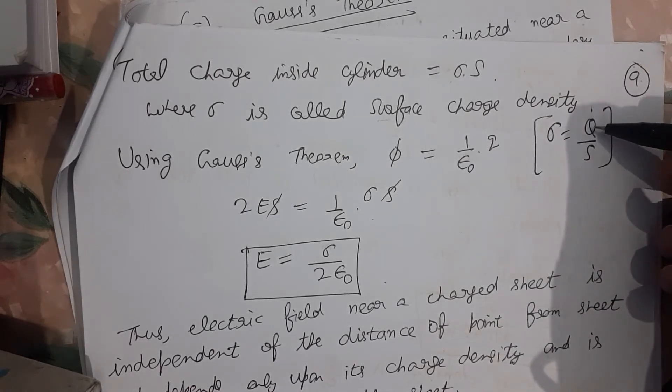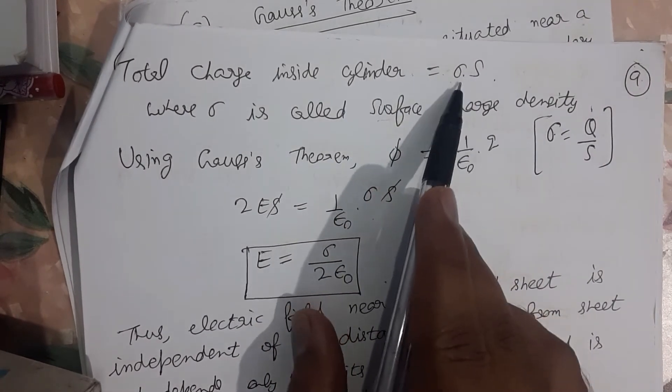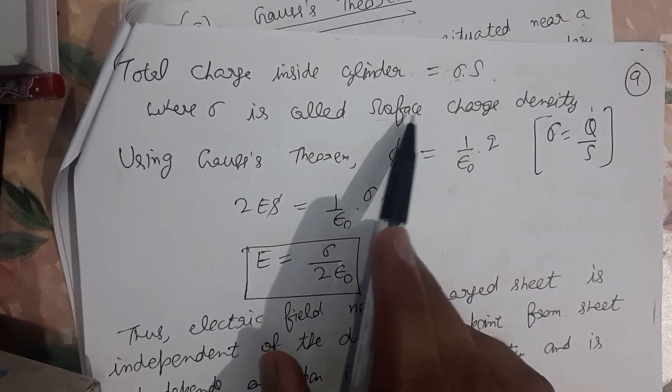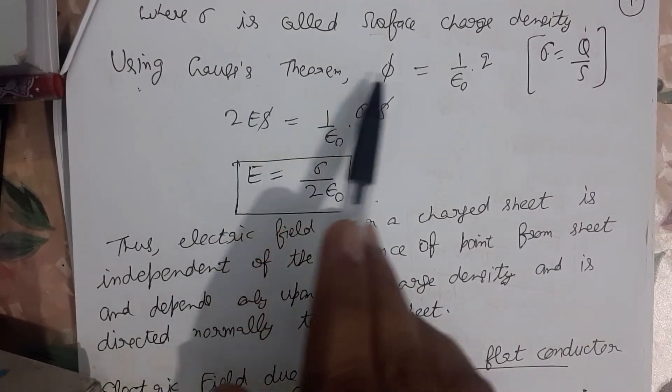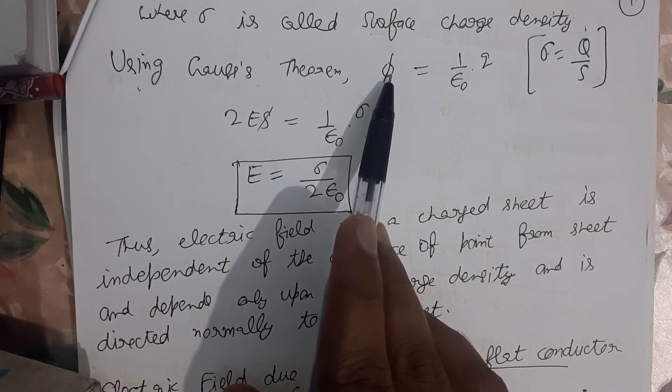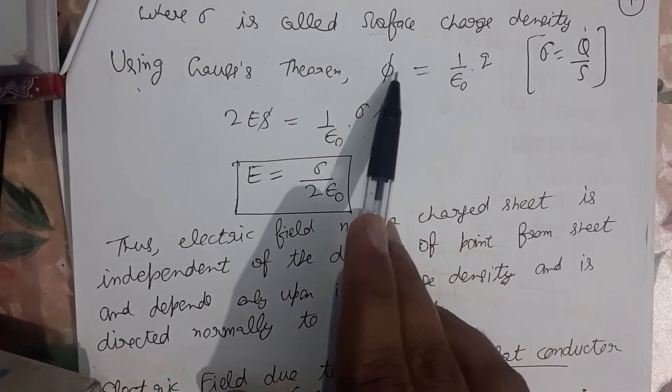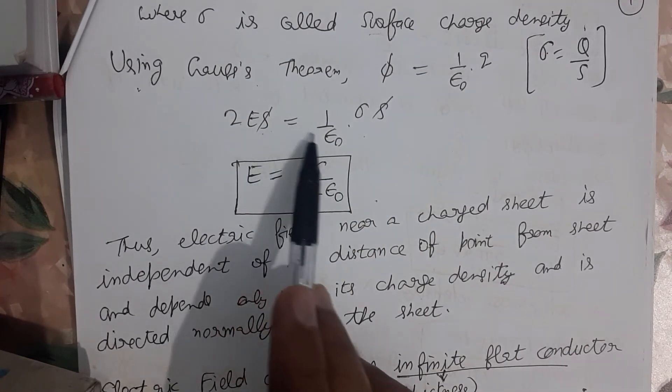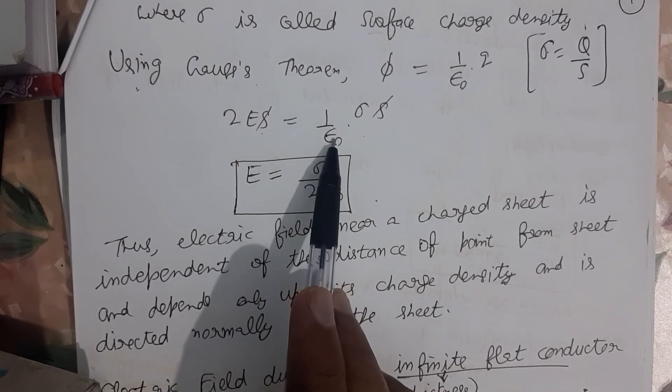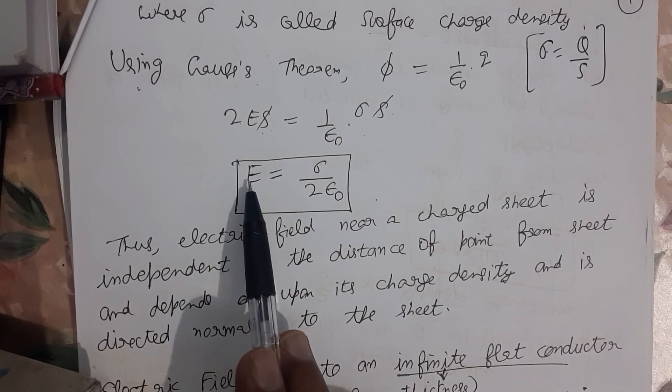From here, find out charge. It is equal to sigma into s. Sigma is known as surface charge density. According to Gauss theorem, we know that flux is given as Q upon epsilon naught. In the given diagram, Phi equals 2Es equals 1 upon epsilon naught times Q, which means sigma into s. Solving, E equals sigma upon 2 epsilon naught.